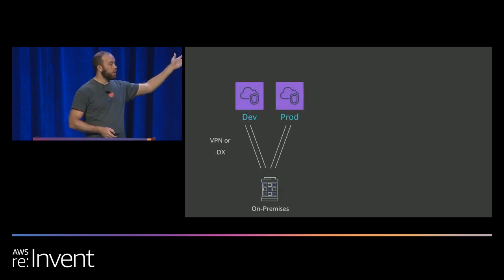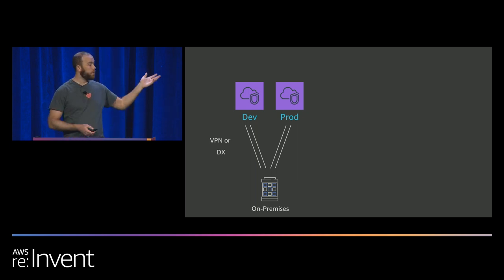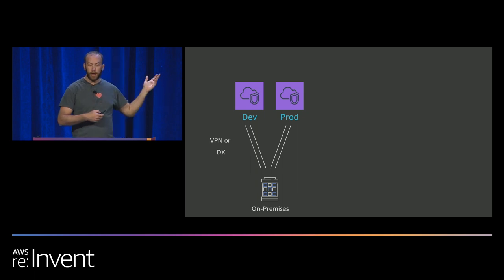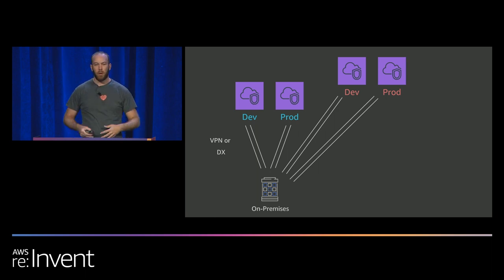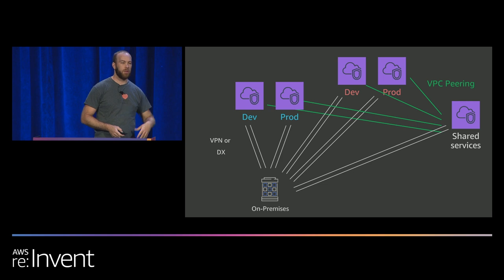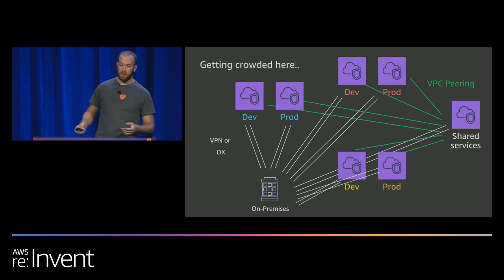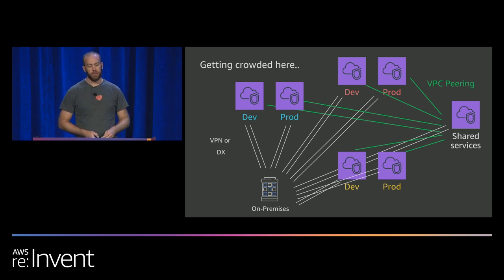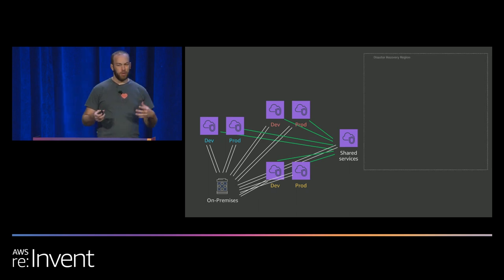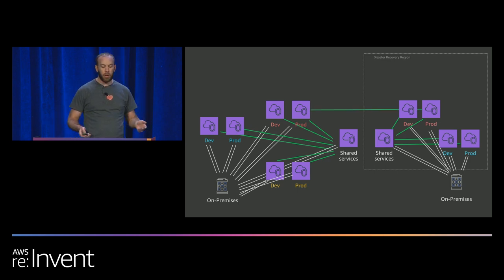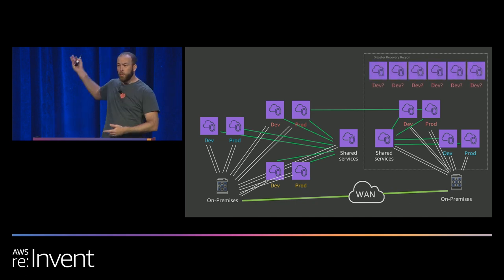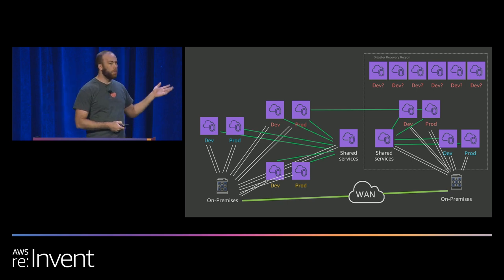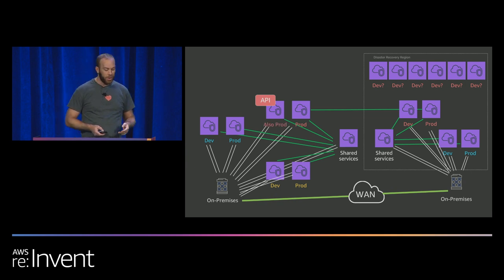A lot of customers start off with a dev and a prod — pretty simple. Connect that into VPN or Direct Connect on-premises. When I say many VPCs, I mean more than two. As you get more people and projects, you start wanting to share services, get some peering in there. Six months into your cloud journey you might be at six VPCs. Then someone says we need disaster recovery, we need to duplicate all that. We need to connect VPCs between regions. Someone sets up a landing zone and now we have 100 new VPCs. And then the developers put an API in their dev VPC, so the dev VPC is now also prod.